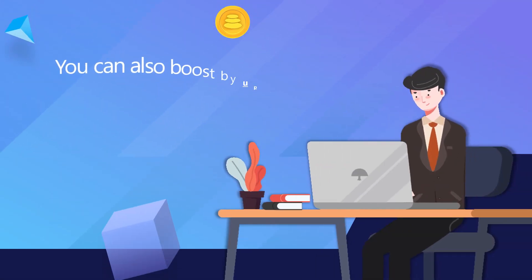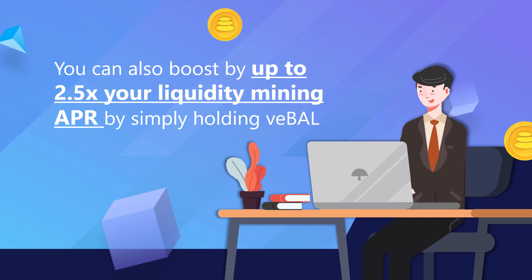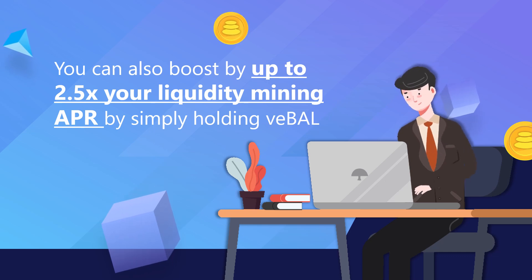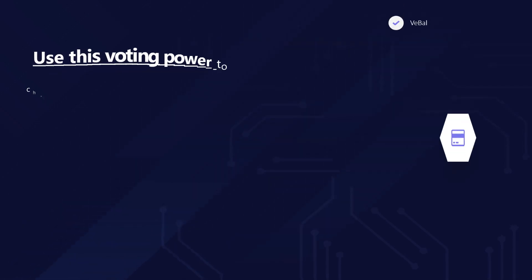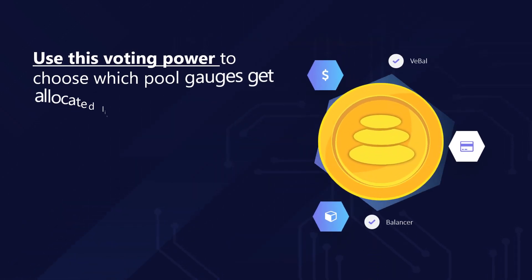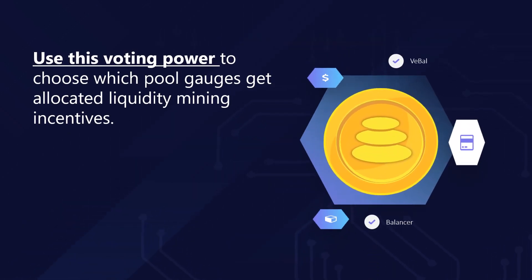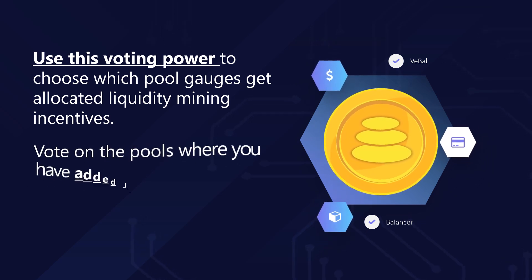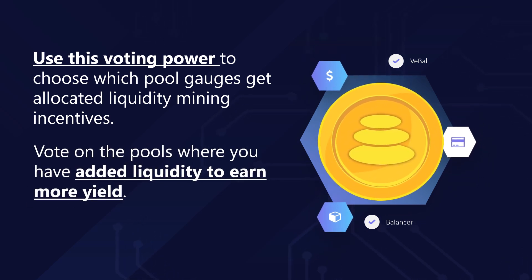Remember that you can also boost by up to 2.5x your liquidity mining APR by simply holding Veble. Use this voting power to choose which pool gauges get allocated liquidity mining incentives. Vote on the pools where you have added liquidity to earn more yield.